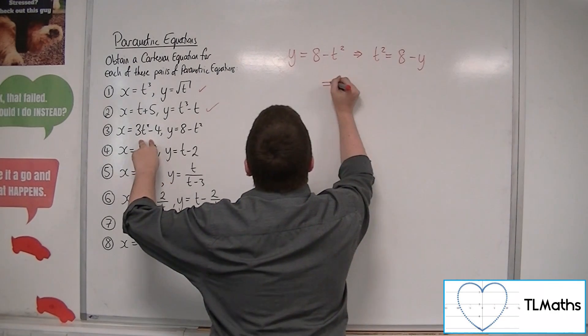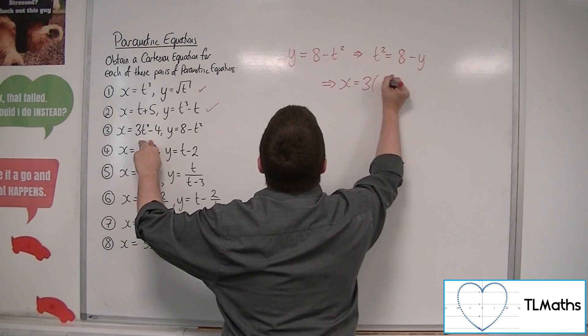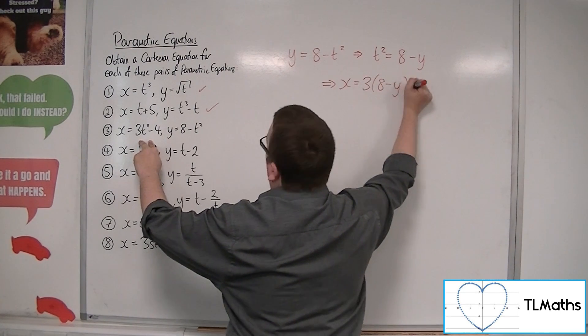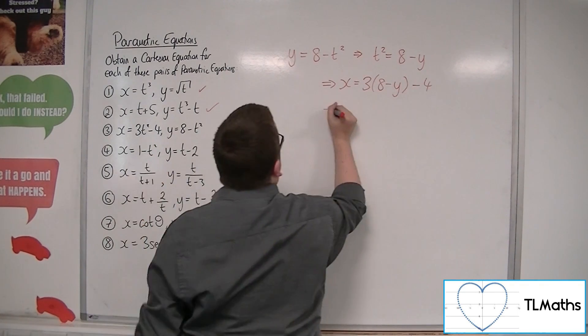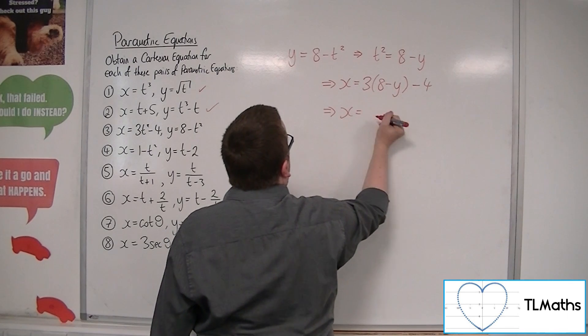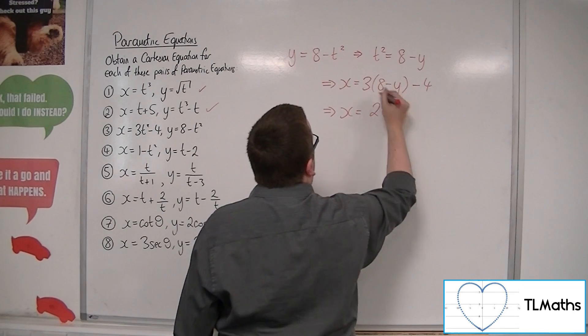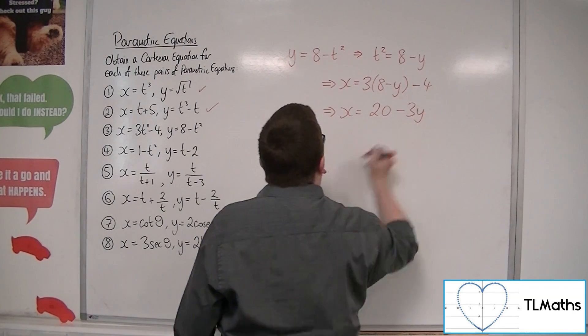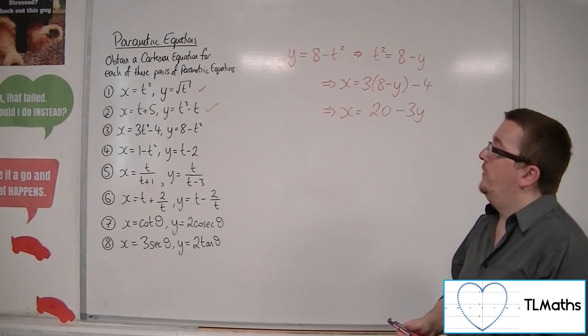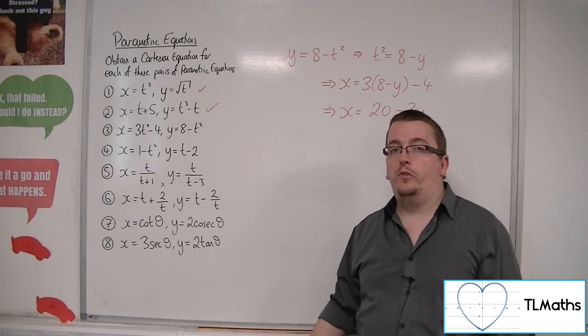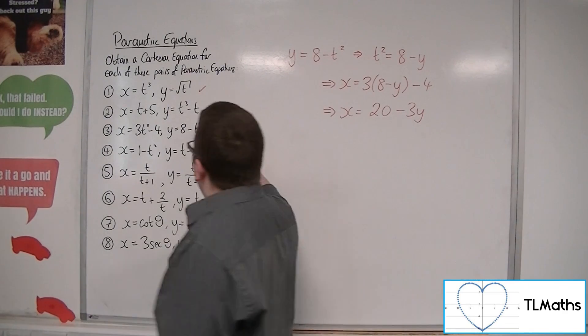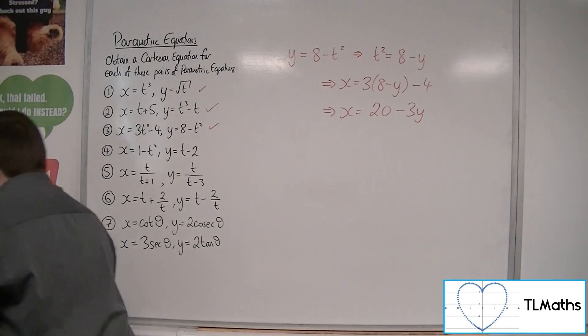And then you can replace the t squared in this equation with this one. So that means that x is equal to 3 lots of t squared. So 3 lots of 8 minus y take away 4. And so if we tidy that up, we get 3 eighths are 24, take away 4, so 20, take away 3y. And there's a Cartesian equation that represents number 3.